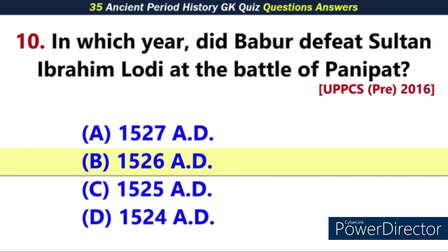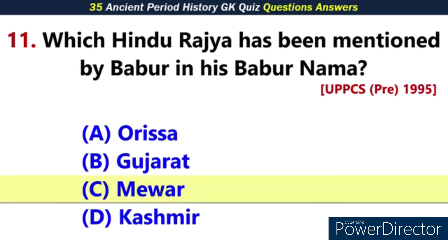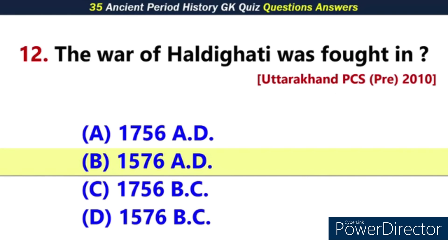Q10. Answer: 1526 AD. Q11. Which Hindu race has been mentioned by Babur in his Baburnama? The battle of Haldighati was fought in 1576 AD.